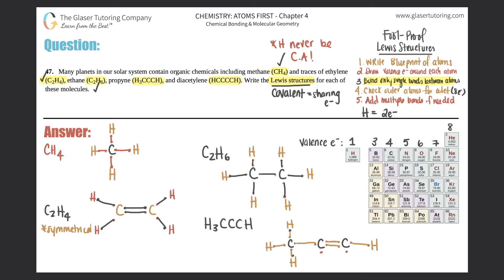We keep adding bonds until the octets make sense. I take the remaining electron from each carbon and swing them together to form a triple bond. Now this carbon has two, four, six, eight electrons, and the other carbon has two, four, six, eight electrons. That's the completed Lewis structure for propyne, with a triple bond between the two terminal carbons.